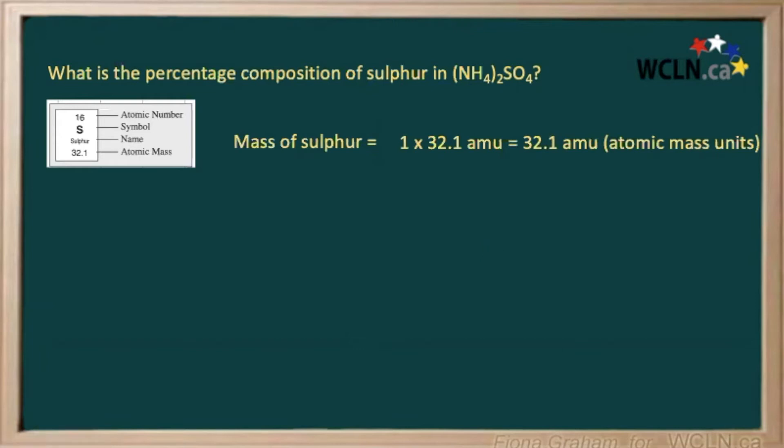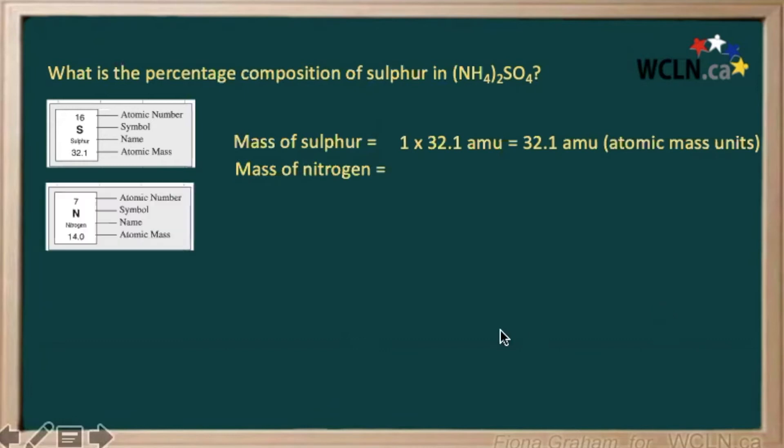Now let's calculate the mass of the rest of our elements. So we've got some nitrogen in there as well, as we can see from our periodic table. The mass of our nitrogen is 14, and we have two atoms of nitrogen. So 2 times 14, of course, would give us 28 atomic mass units.